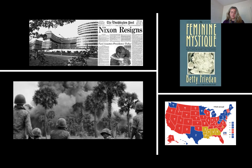Congress demanded that Nixon hand the tapes over for review. Their request was denied, as Nixon argued the tapes and conversations were protected under executive privilege. As a result of Nixon's refusal, the House of Representatives decided to impeach Richard Nixon in July of 1974. Before the Senate could remove Nixon from office, he resigned on August 9, 1974. It is important to remember that it was not the Democratic Party but Nixon's own party — the Republicans — who controlled the Senate and ultimately forced Nixon to resign.